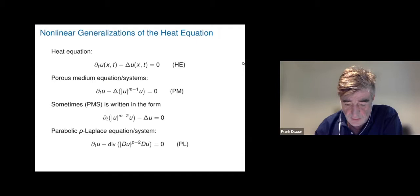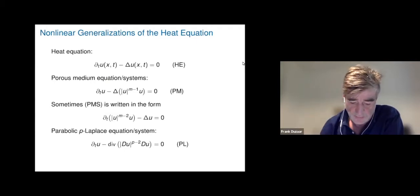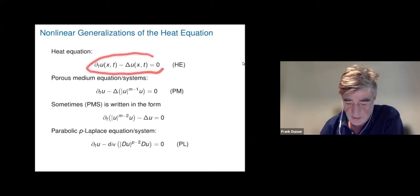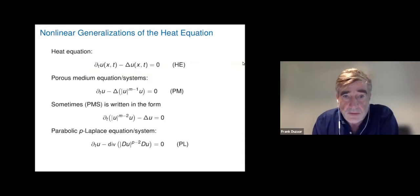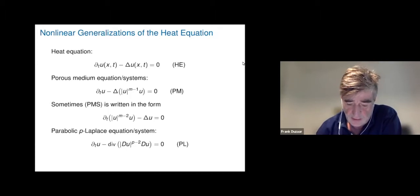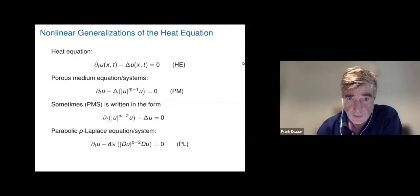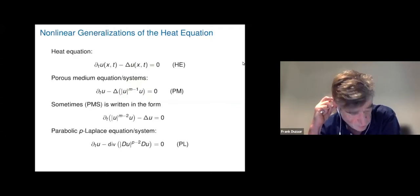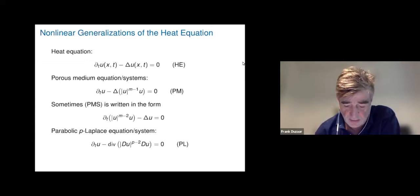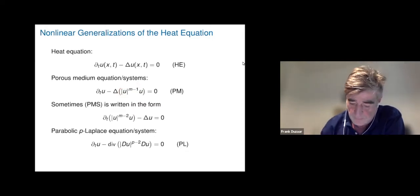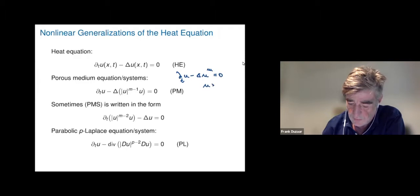The starting point is nonlinear generalizations of the heat equation. The classical heat equation is the time derivative of u minus the Laplacian of u equals zero. One way to generalize this to a nonlinear parabolic equation is to replace u with a power of u. For sign-changing solutions, I write it as |u|^(m−1) · u, so dt u − Δ(|u|^(m−1) · u) = 0.